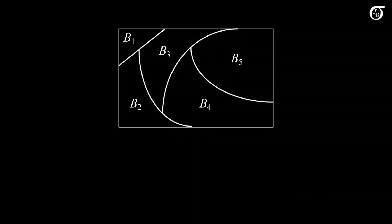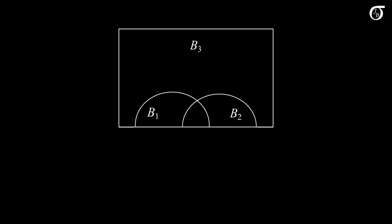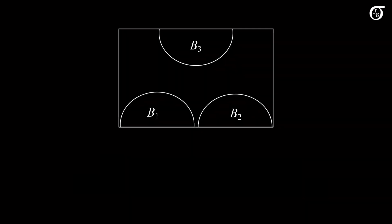This idea generalizes to any countable number of B's, and any way they divide up the sample space, as long as they are mutually exclusive and they span the entire sample space. If the B's are not mutually exclusive, then we might end up counting some parts of A more than once. If the B's are not exhaustive, then some parts of the sample space are missed, and thus we might miss some parts of A.